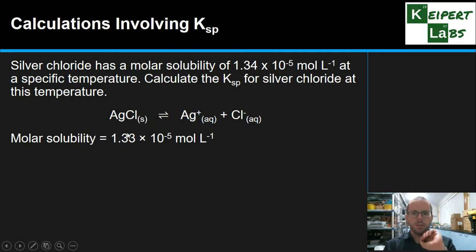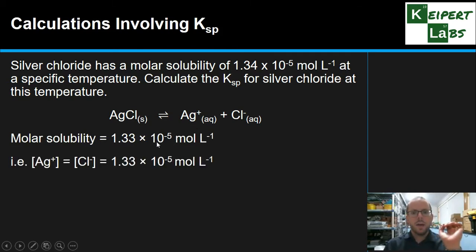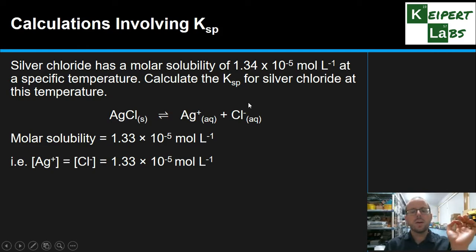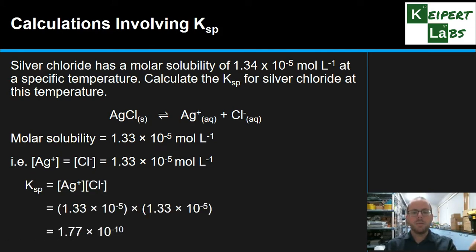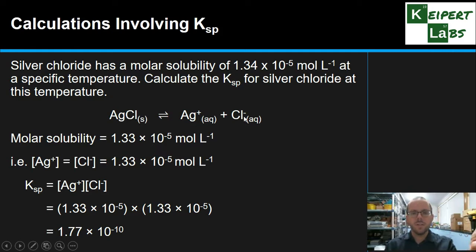So the correct value is 1.33 times 10 to the minus 5 moles of silver chloride dissolves. Since the ratio is one to one, our silver and chloride concentrations are also 1.33 times 10 to the minus 5. We write our KSP expression — silver concentration times chloride concentration — substitute in, and we get a KSP value of 1.77 times 10 to the minus 10. That's our KSP at this temperature. It's a really small value, meaning that silver chloride is almost entirely solid, with only a tiny fraction dissolved as ions.